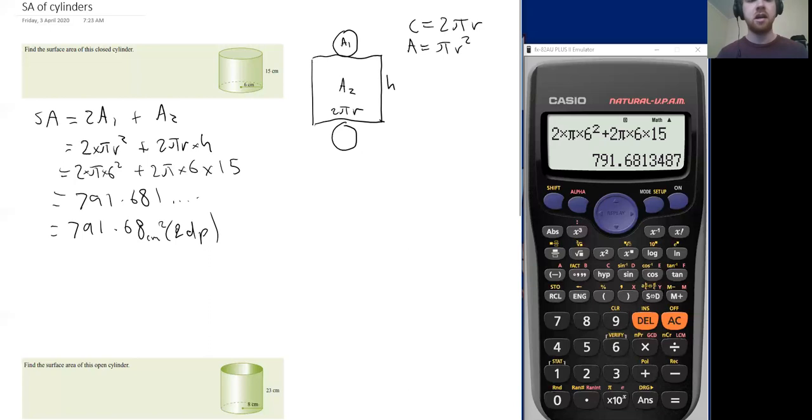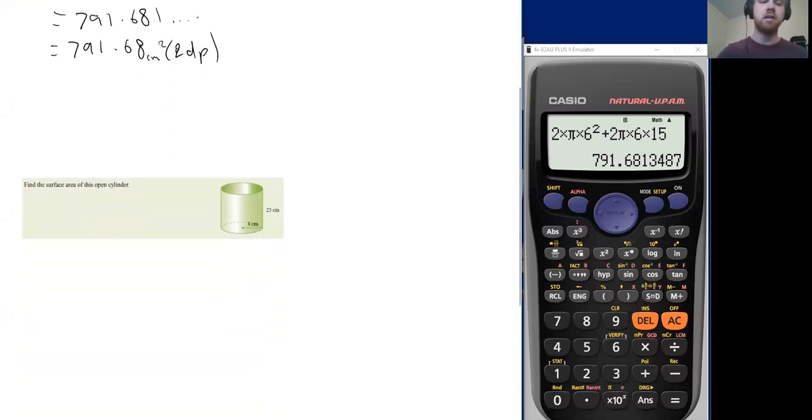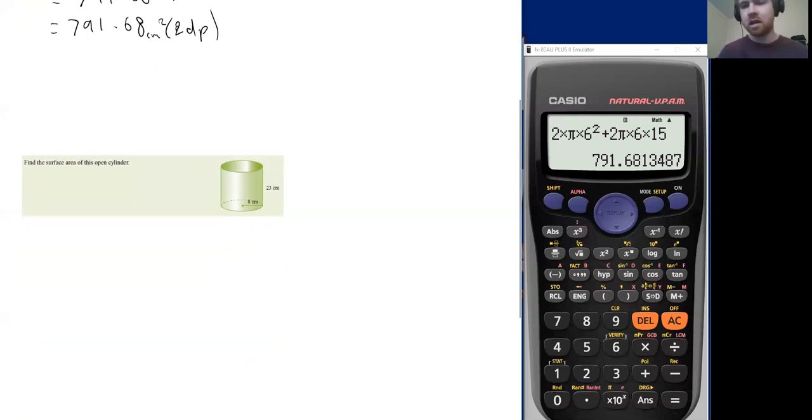So we've flattened out our cylinder. We've found our surface area. Now let's try this for an open cylinder, which is actually a bit easier. If we were to just do the net of an open cylinder, it's just a rectangle that's been curled up. So there's only one face of an open cylinder. There's no circles on either end because you don't have a top and bottom.